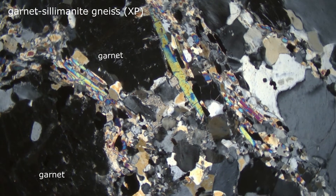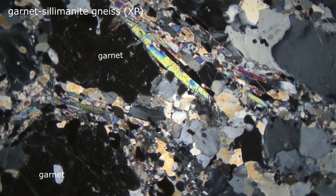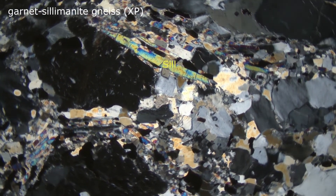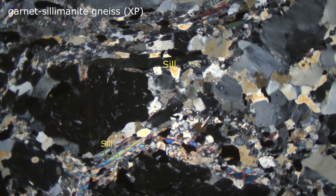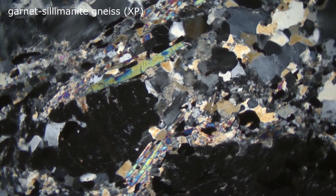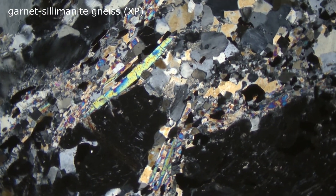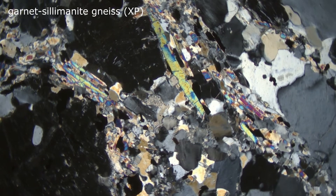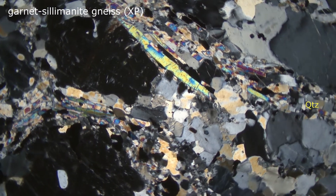The garnet, because it is isotropic, remains black with stage rotation. The sillimanite shows up to second-order interference colors and they change as we rotate the stage. And the quartz and feldspar show their usual white, gray, and black interference colors.